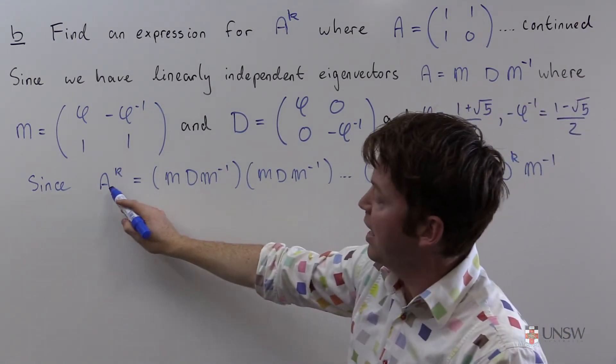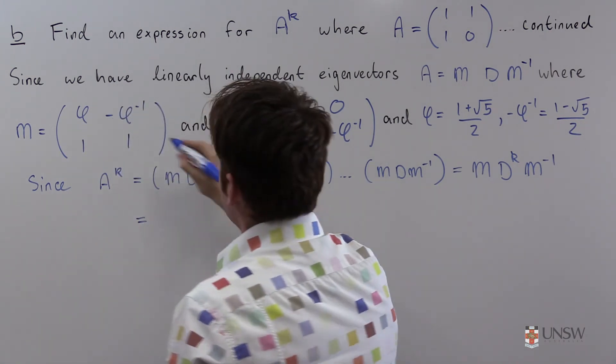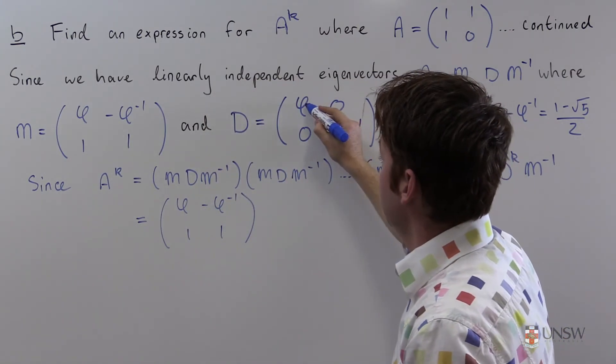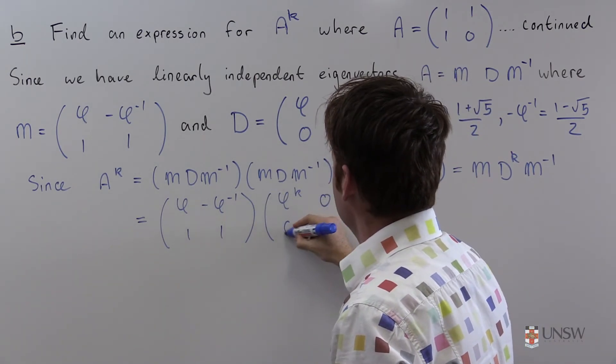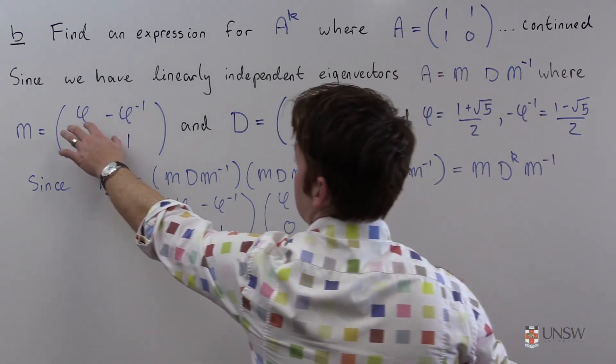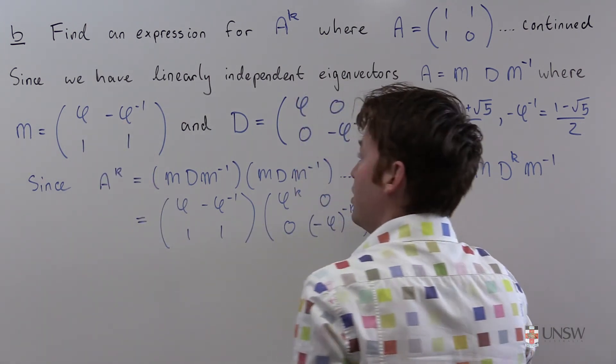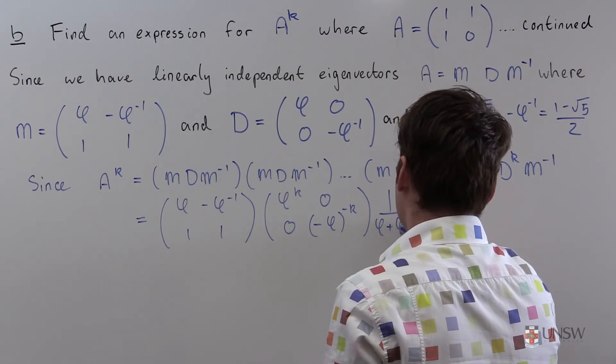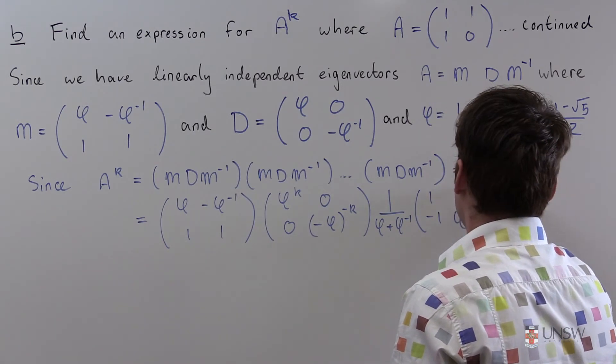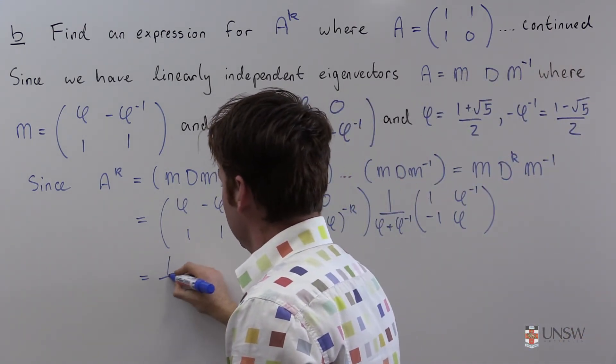So I've reduced taking a power of A to taking a power of D, which is really easy. I'll show you how. So M is just this matrix here. That's [φ, -φ^(-1); 1, 1]. D to the power k, well that's just this to the k and this to the k. So that's [φ^k, 0; 0, (-φ)^(-k)]. And M^(-1), well I have to swap those and negate those and divide by the determinant. So it's going to be 1/(φ + φ^(-1)). And that's [1, φ^(-1); -1, φ]. Good. And this here, that's just √5. So that's nice. I'll bring that out the front. So that's 1/√5.